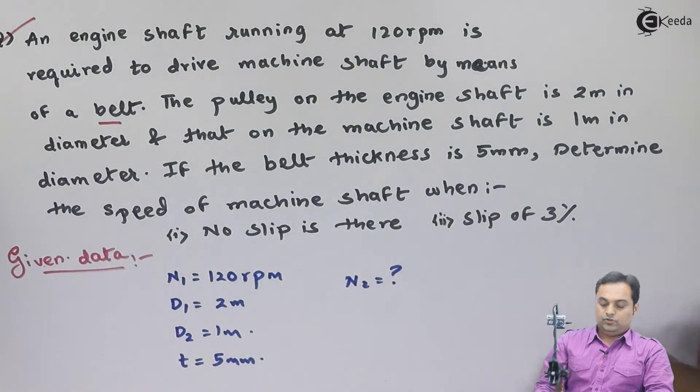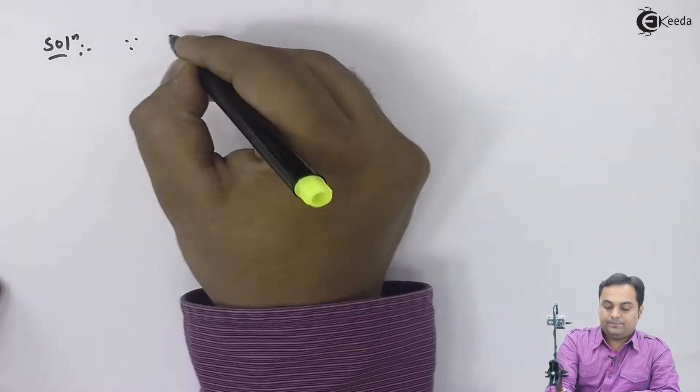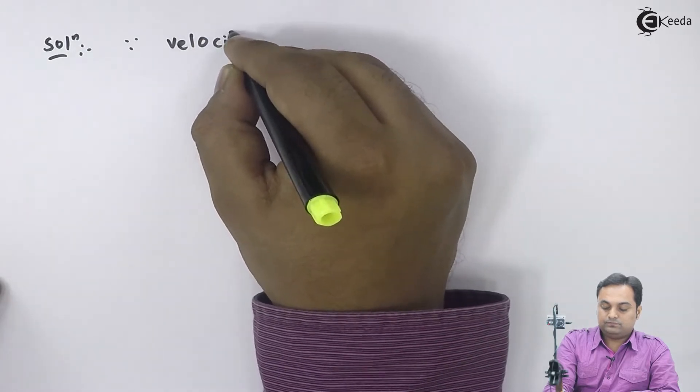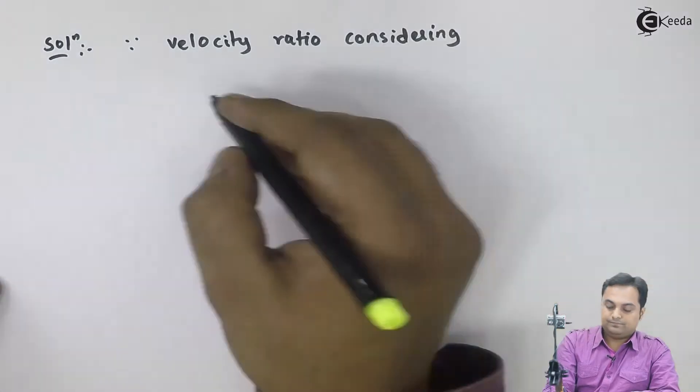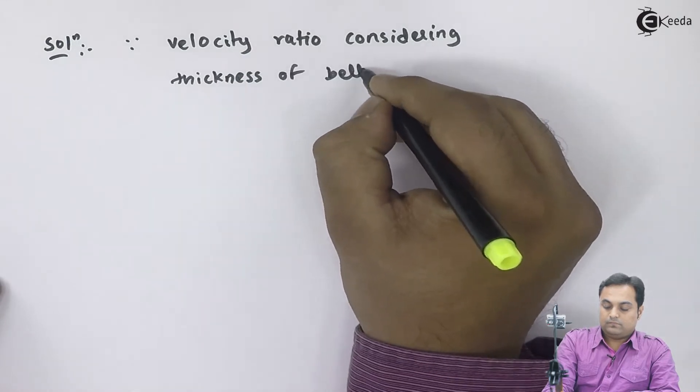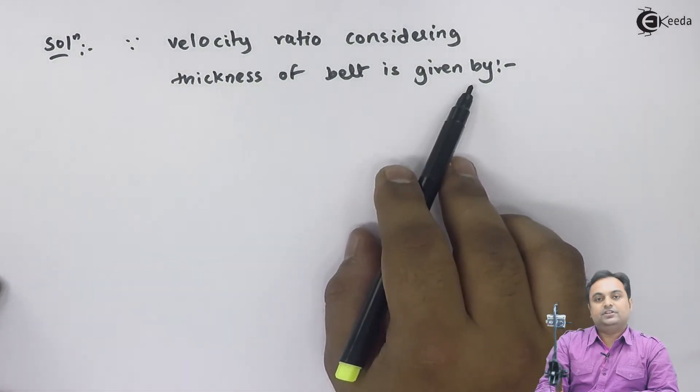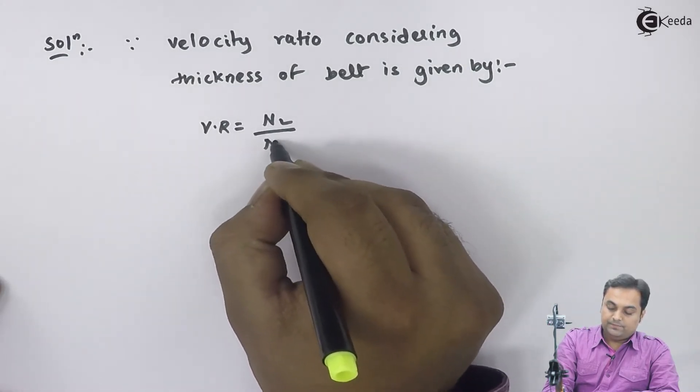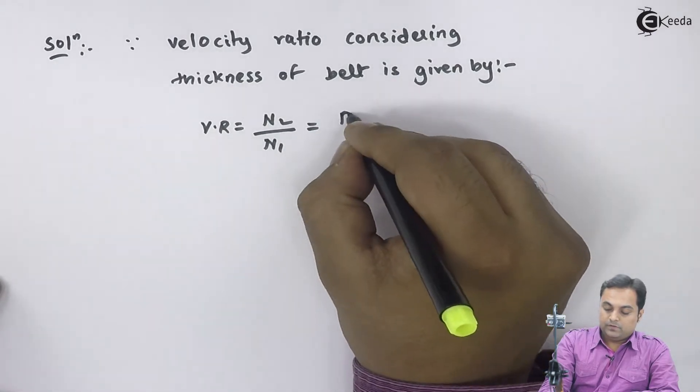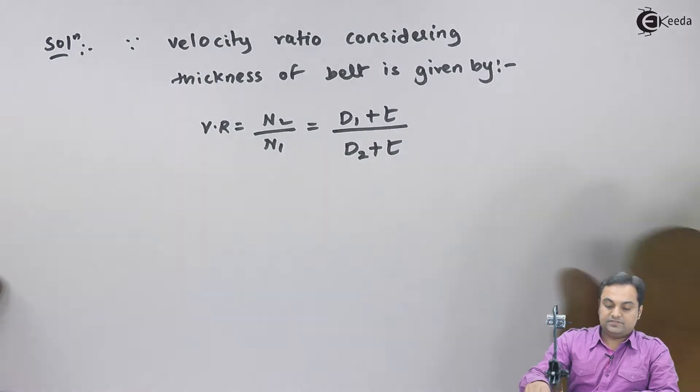So we will solve this problem. Solution: Since velocity ratio considering thickness of belt is given by the relation, velocity ratio is equal to n2 upon n1 is equal to d1 plus t upon d2 plus t. That is, thickness needs to be added.